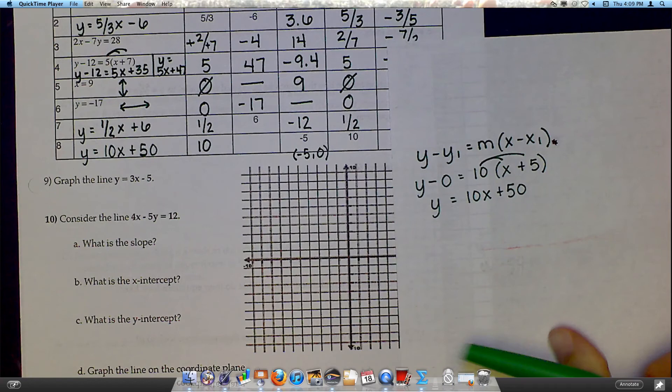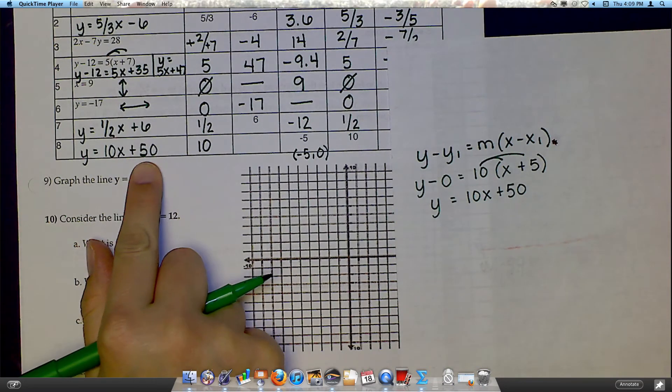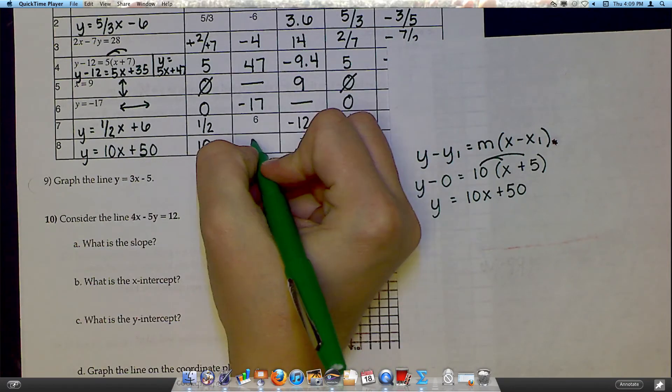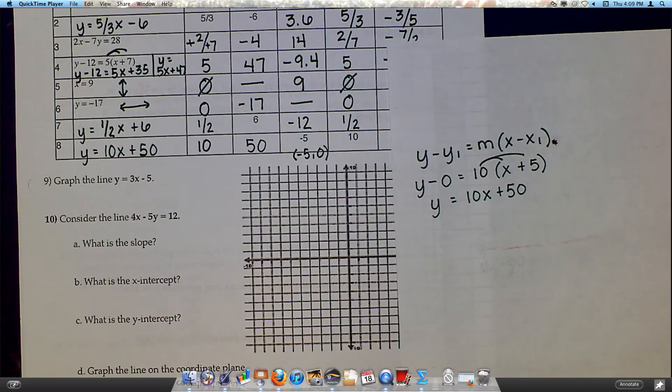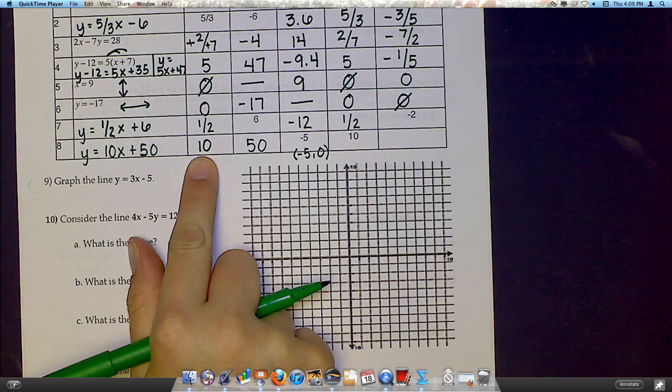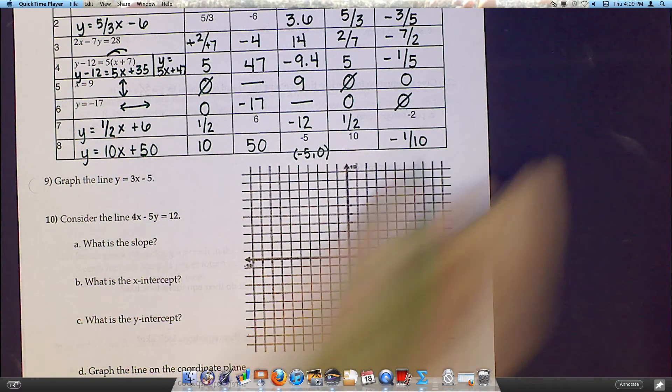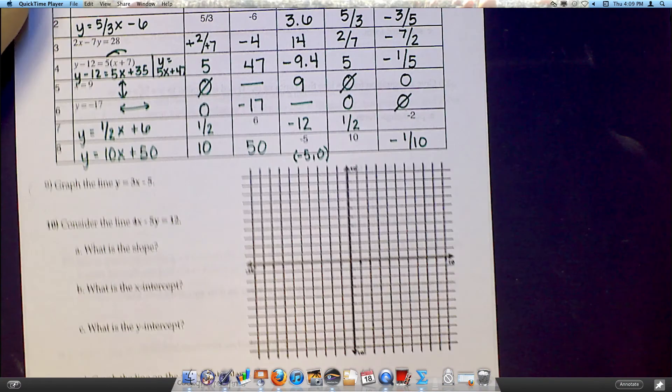The good news with that is now that's in slope-intercept form. So that means my y-intercept is just this number here. My y-intercept would be 50. And finally, my perpendicular slope, the opposite reciprocal of 10, is negative 1 over 10. So there's your whole table.